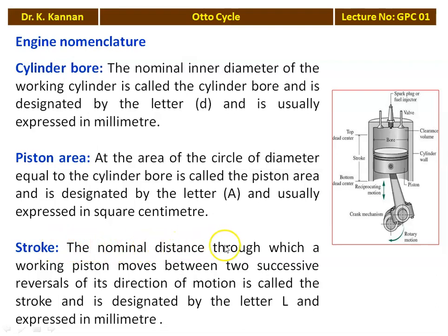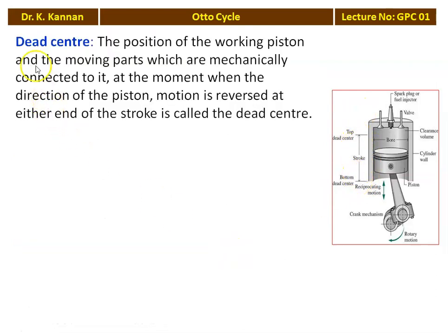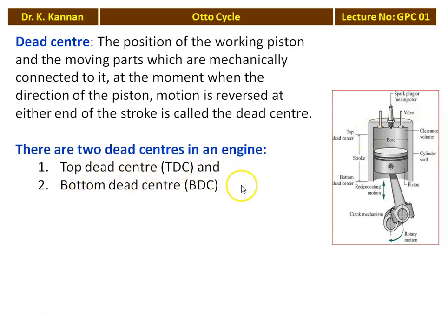The stroke length L is the nominal distance through which the working piston moves between two successive reversals of its direction of motion, designated by L and expressed in millimeters — it is the distance between top dead center and bottom dead center. The dead center is the position of the working piston at the moment when the direction of piston motion is reversed at either end of the stroke. There are two dead centers: TDC and BDC.